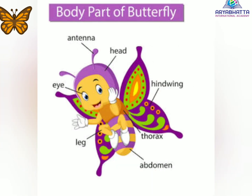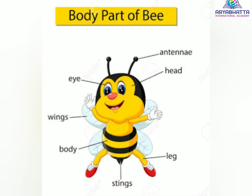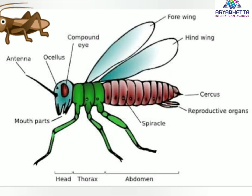Abdomen is the largest part of an insect's body. Some insects have stingers at the back of their abdomen. Small holes are present on either side of the abdomen. They are called spiracles. Insects breathe through these spiracles.